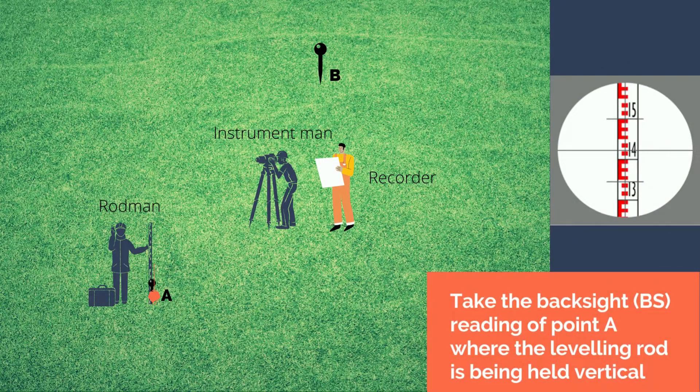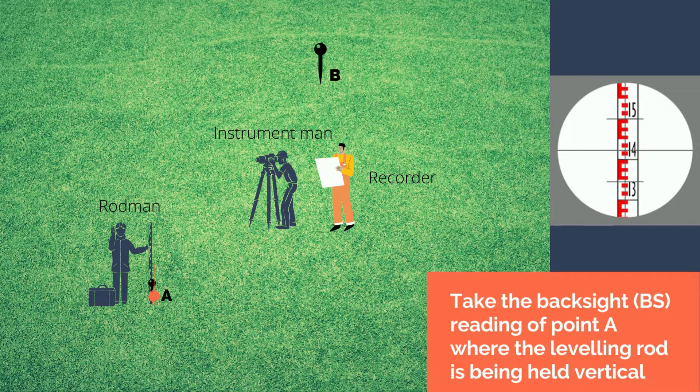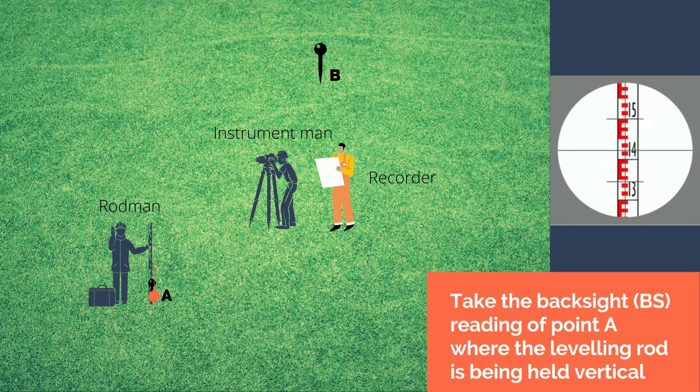Upon setting up the instrument, take the backsight reading of point A where the leveling rod is being held vertical by the rodman with the aid of a plumb bob. The instrument man, on the other hand, must do a reading up to the accuracy of a millimeter or thousandth of meter.